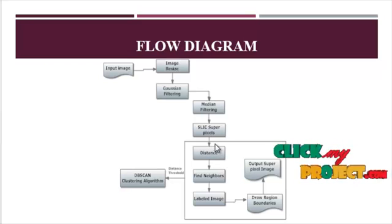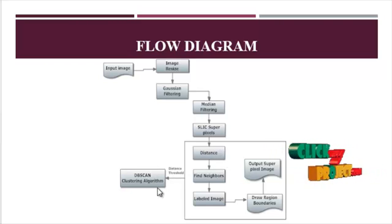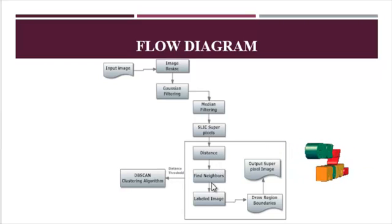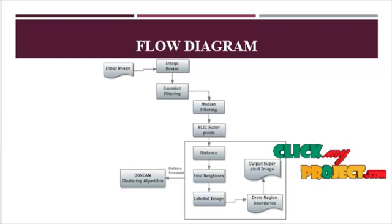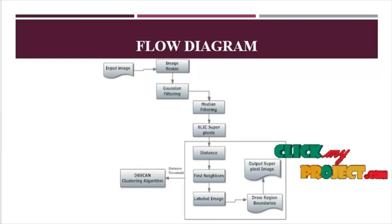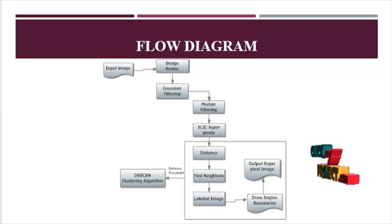Next we apply the DBSCAN clustering algorithm. The DBSCAN algorithm is based on distance-based neighbor finding, then labeling the image, then drawing the boundary region based on distance. DBSCAN is a density-based cluster algorithm and it improves the performance of the segmentation algorithm by adding geometric constraints. The proposed method includes two stages: clustering stage and merging stage.